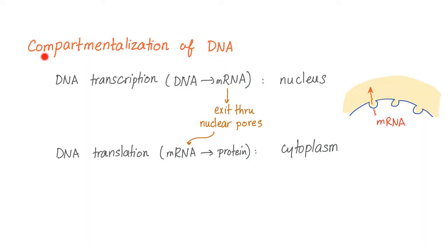Here is an important concept called compartmentalization of the DNA. DNA transcription, which is DNA forming an mRNA, occurs in the nucleus. This is different from DNA translation, which occurs in the cytoplasm. Different compartments. This is called compartmentalization of the DNA. So, transcription in the nucleus, translation in the cytoplasm. This mRNA in the nucleus will exit the nucleus through the nuclear pores, and then it will go to the cytoplasm where translation or converting this mRNA into proteins or peptides takes place.